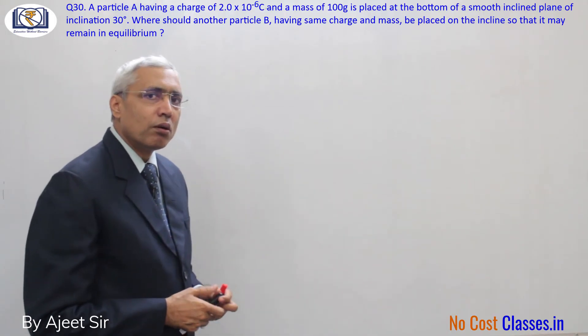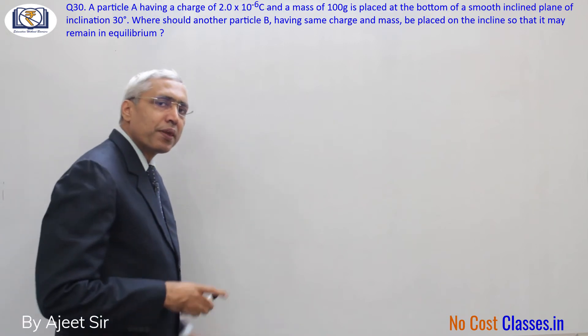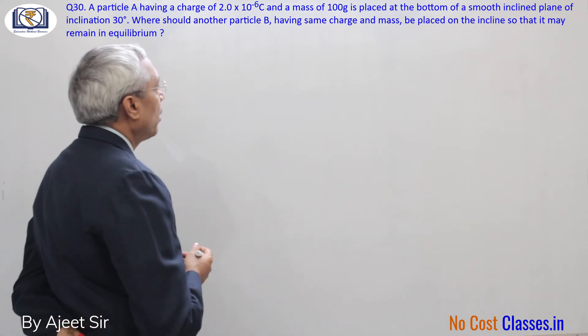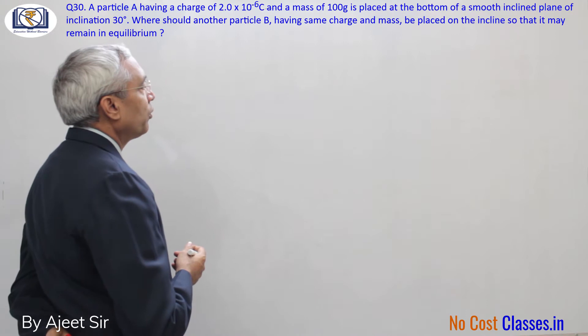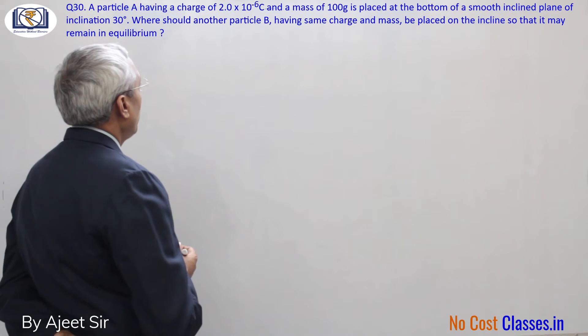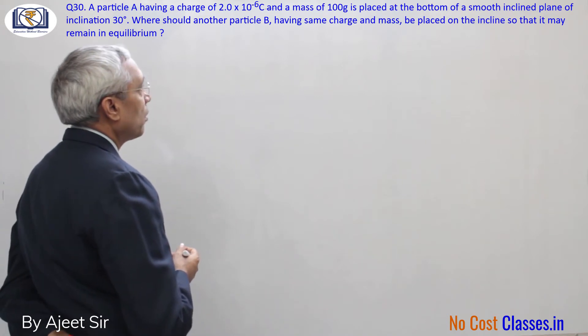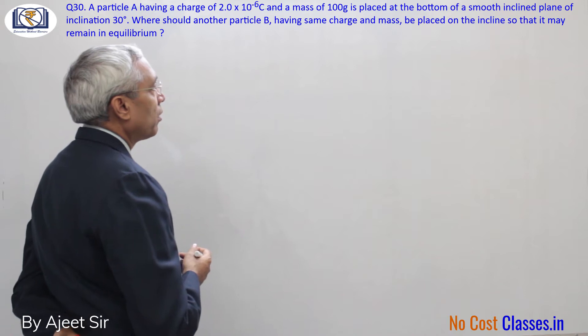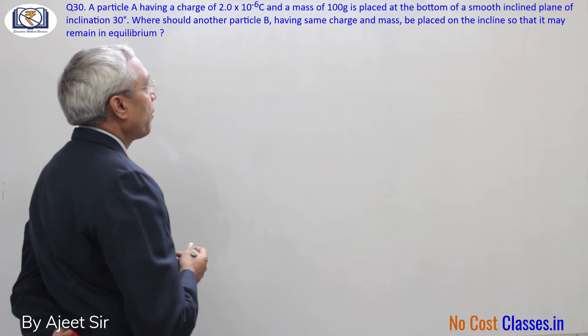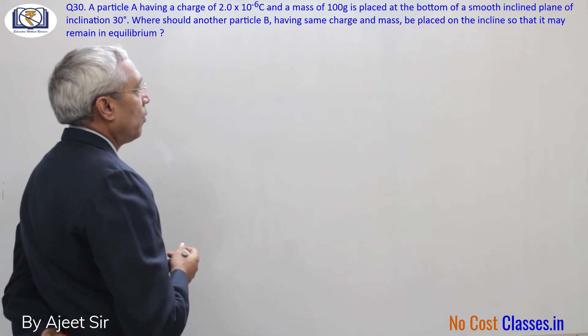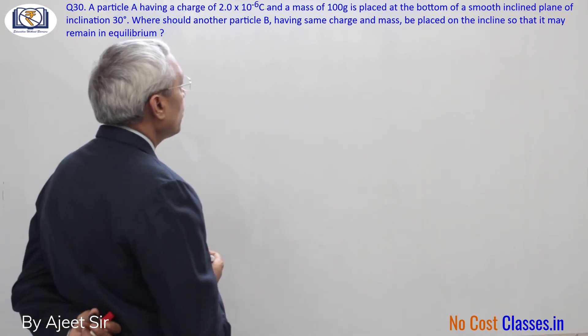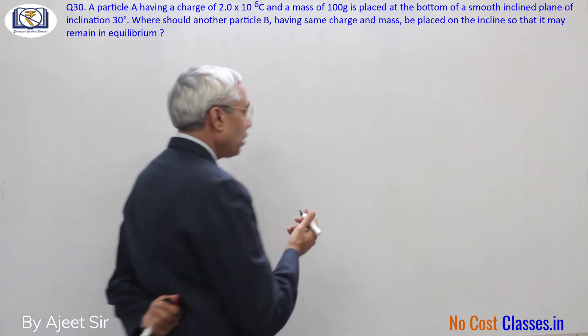Hello students. So here we have two charges, each of mass 100 grams and charge 2 into 10 to the power minus 6 coulomb. One particle is here and the second charge is also the same. The second charge lies on an inclined plane which is inclined at 30 degrees. Let's see the question as it is.